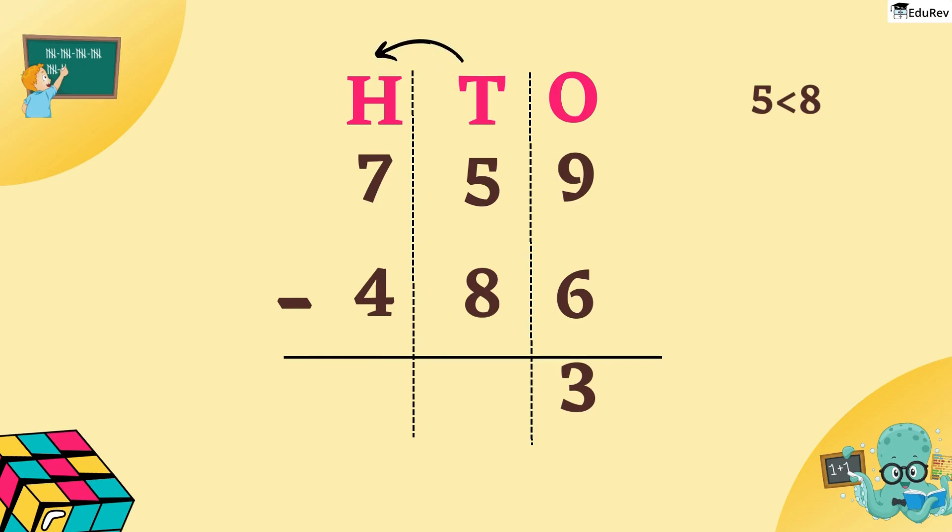We will borrow 100 from 700 which leaves us with 6 hundreds in 100s column. We will use that 100 in 10s column. Children, we know that 100 is 10 tens. So, 10 plus 5 is equal to 15.